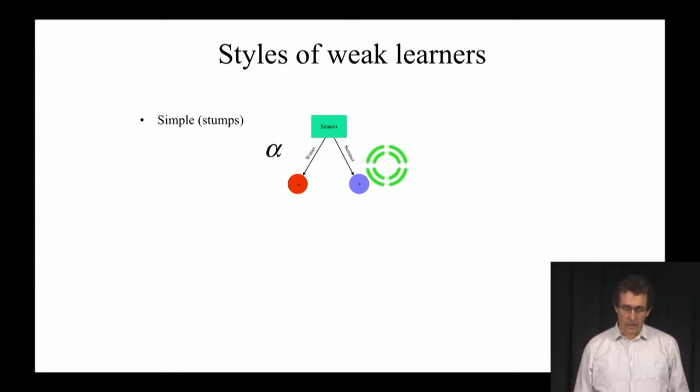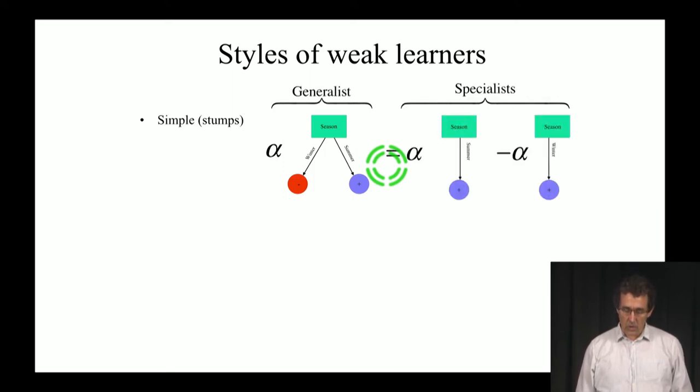Interestingly, you can actually make it even simpler by splitting it into two parts. You can have one rule that says if the season is summer, then I do plus. And another one that if the season is winter, then I do plus. Each one of them gets an alpha. Maybe if it was this alpha originally, then it's alpha here and minus alpha here. Why is this worthwhile?